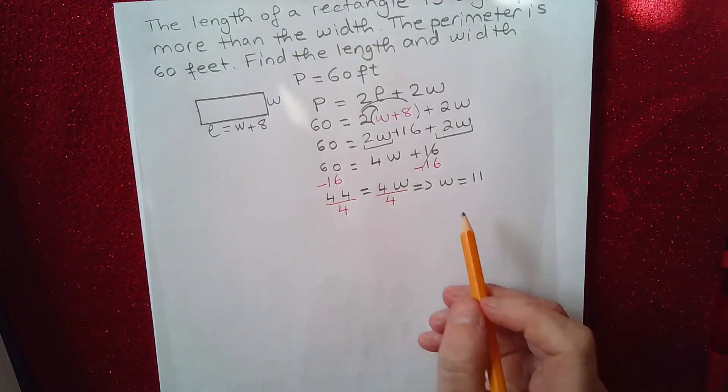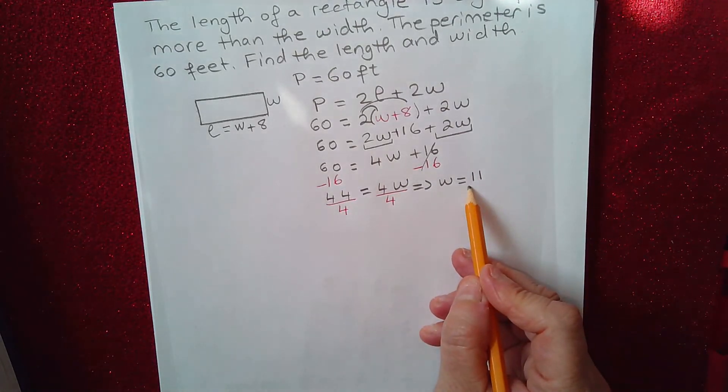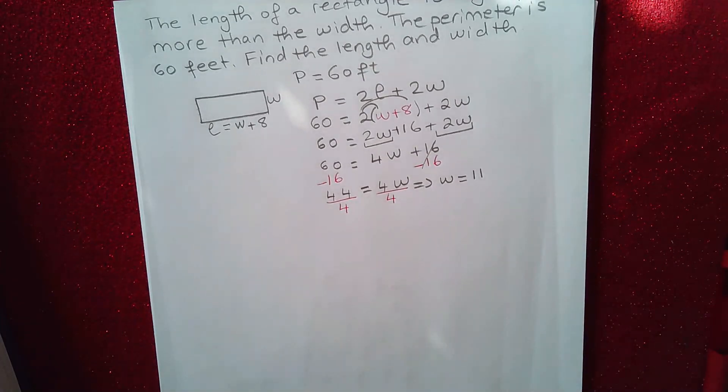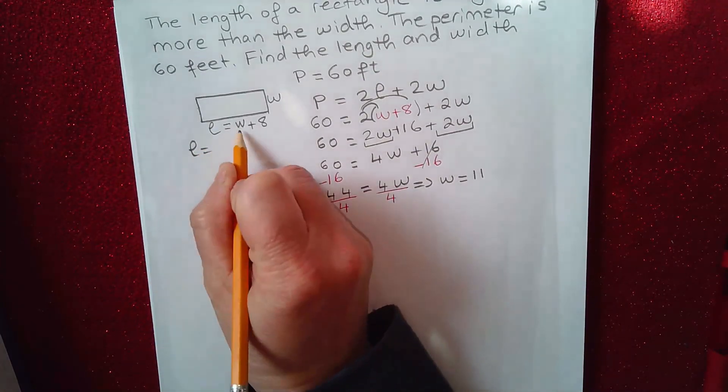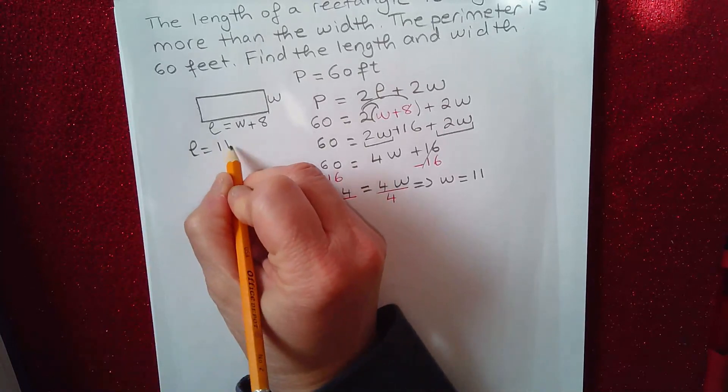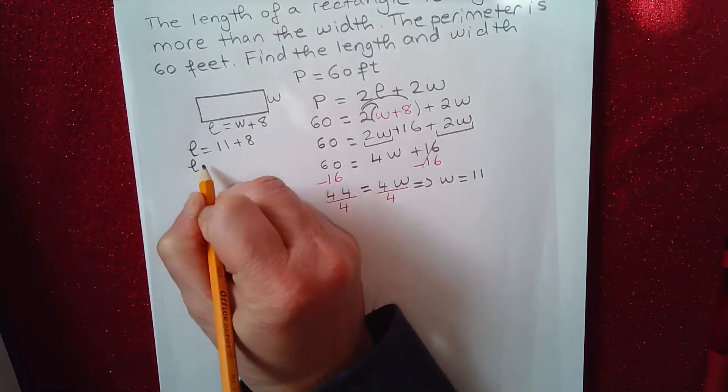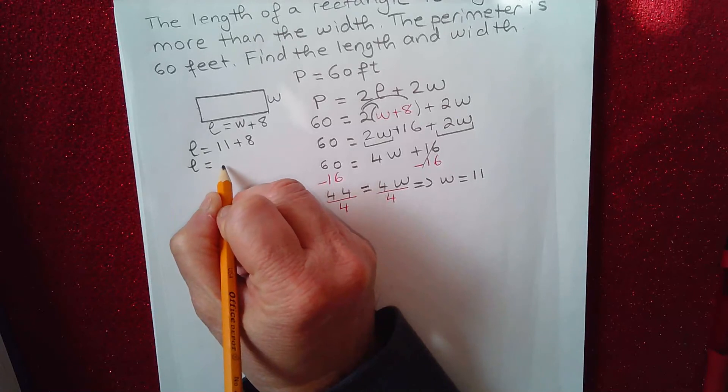So now I have W, and now I can easily solve for L. So L is equal to W plus eight. That's 11 plus eight. So that gives me L equals 19.